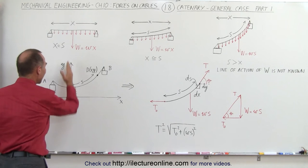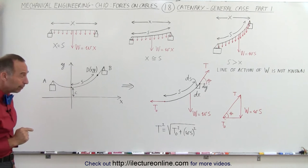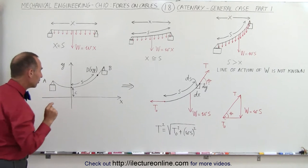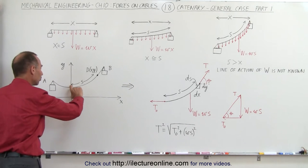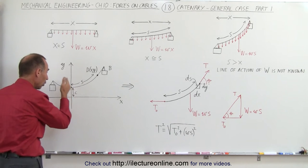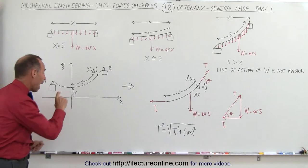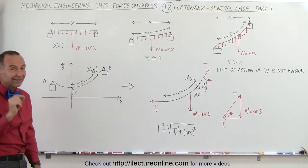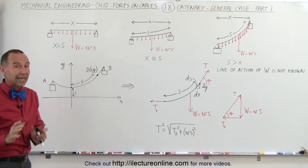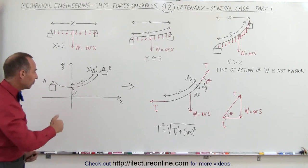What is important is that we set up a coordinate system where the y-axis goes right through the lowest point on the cable. The origin is placed below that point some distance — let's call it c for constant. Later on we'll show you how to calculate c, which depends upon the other parameters of the cable.